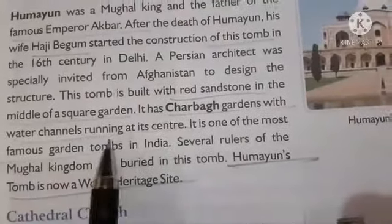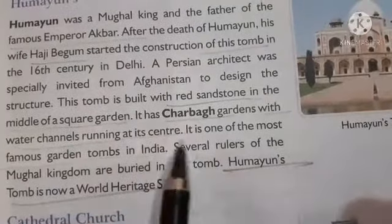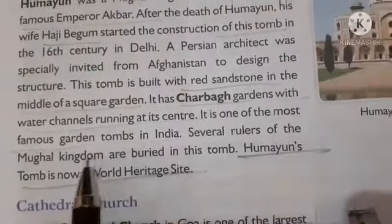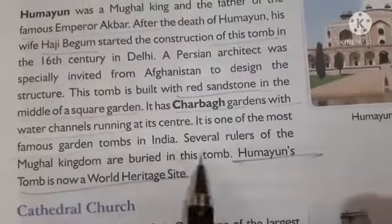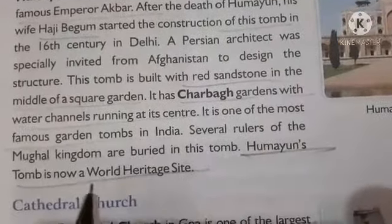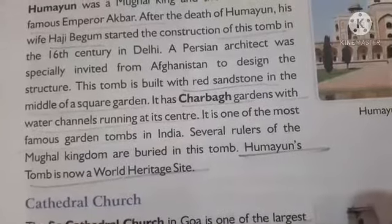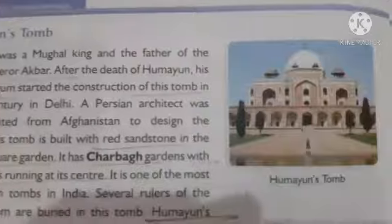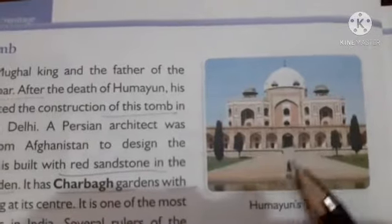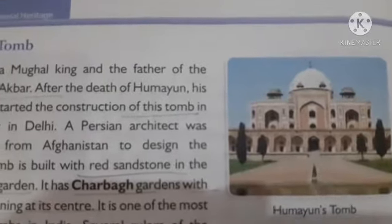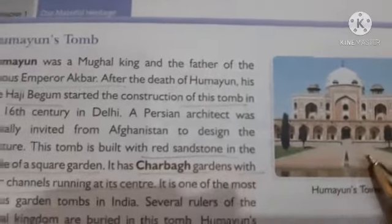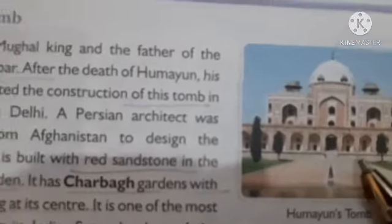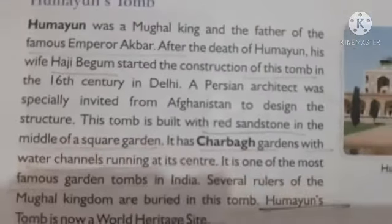This tomb is built with red sandstone in the middle of a square garden. It had a Charbagh garden — it is also called Charbagh style — with water channels running at its center. It is one of the most famous garden tombs in India. Several rulers of the Mughal kingdom are buried in this tomb. Humayun's Tomb is now a World Heritage Site, included by UNESCO. This is the picture of Humayun's Tomb — it is situated in Delhi and was built by Humayun's wife Haji Begum.